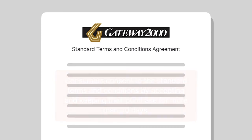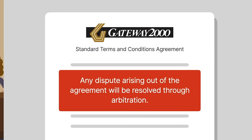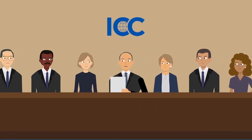The agreement also contained a dispute resolution provision providing that any dispute arising out of the agreement would be resolved through arbitration. The arbitration would take place before the International Chamber of Commerce, or ICC.